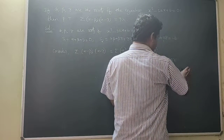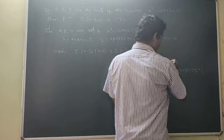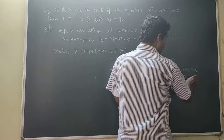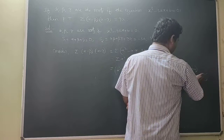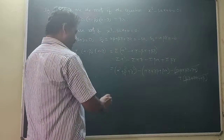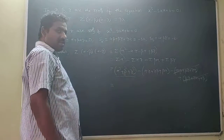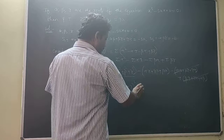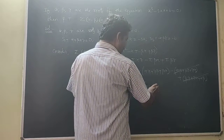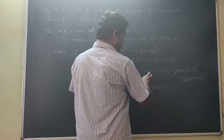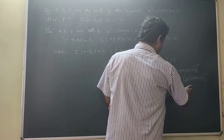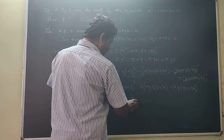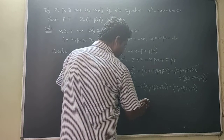Expanding further: plus beta·gamma + gamma·alpha + beta·gamma + gamma·alpha. The repeated cross terms cancel out. This simplifies to alpha² + beta² + gamma² minus (alpha·beta + beta·gamma + gamma·alpha), which equals S1² - 2S2 minus S2, giving S1² - 3·S2.